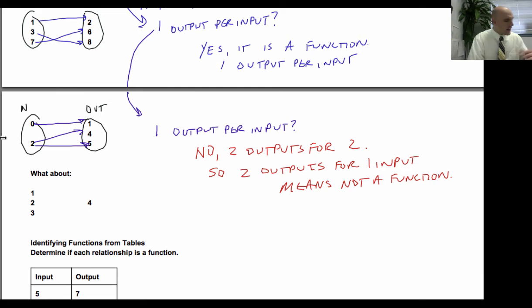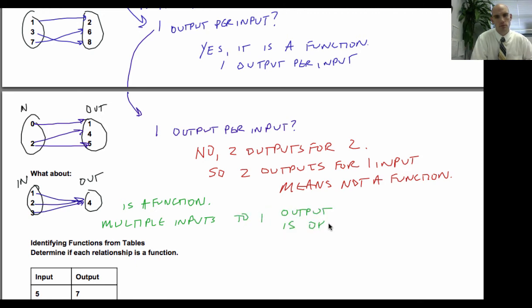What about the other way around? What if I had all of these inputs? Okay? And they all mapped to the same output. You want to buy one pencil? Four bucks. Two pencils. Four bucks. Three pencils. Four bucks. Well, that is a function. Okay? That's just a fact. Is a function. Because multiple inputs to one output is okay. That's a function. That can happen. That is a function. So you have multiple outputs to one input. That's okay. That's a function.